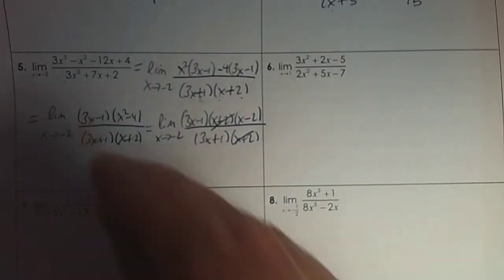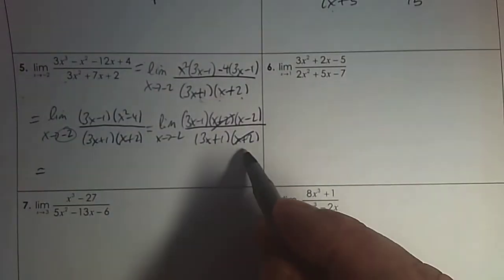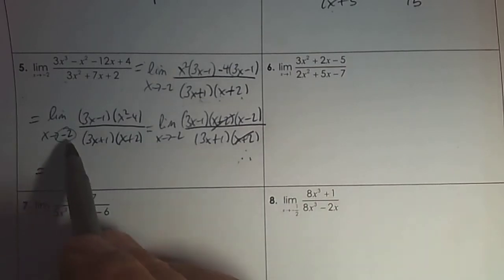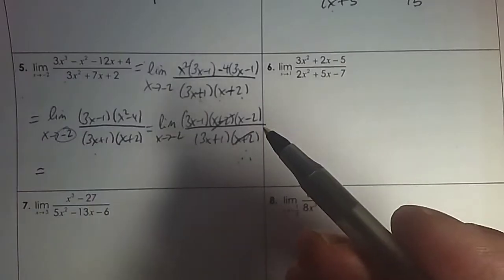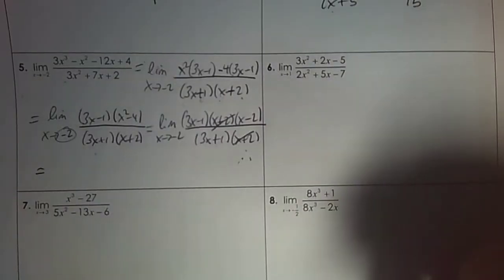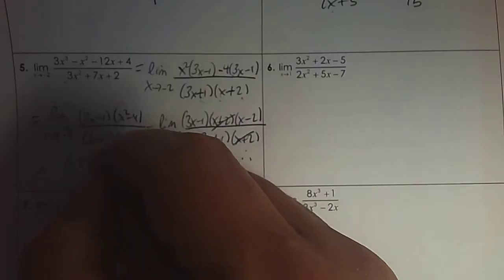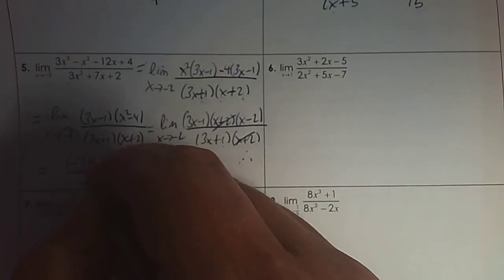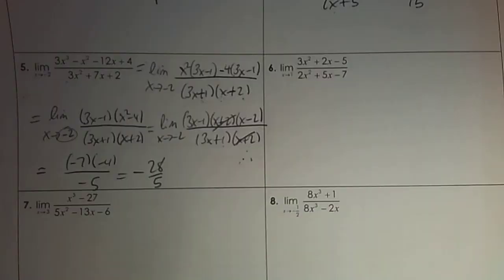Then I'm going to divide out. I know better because negative 2 plugged in here gives you the 0 over 0 you're dividing out. Negative 2 into 3x plus 1 would not give you the 0 over 0 you need. What's left over? Plug in negative 2: that's negative 6 take away 1, that's negative 7. That's negative 4. The denominator: negative 6 plus 1. So that's negative 28 over 5, which is a good answer.